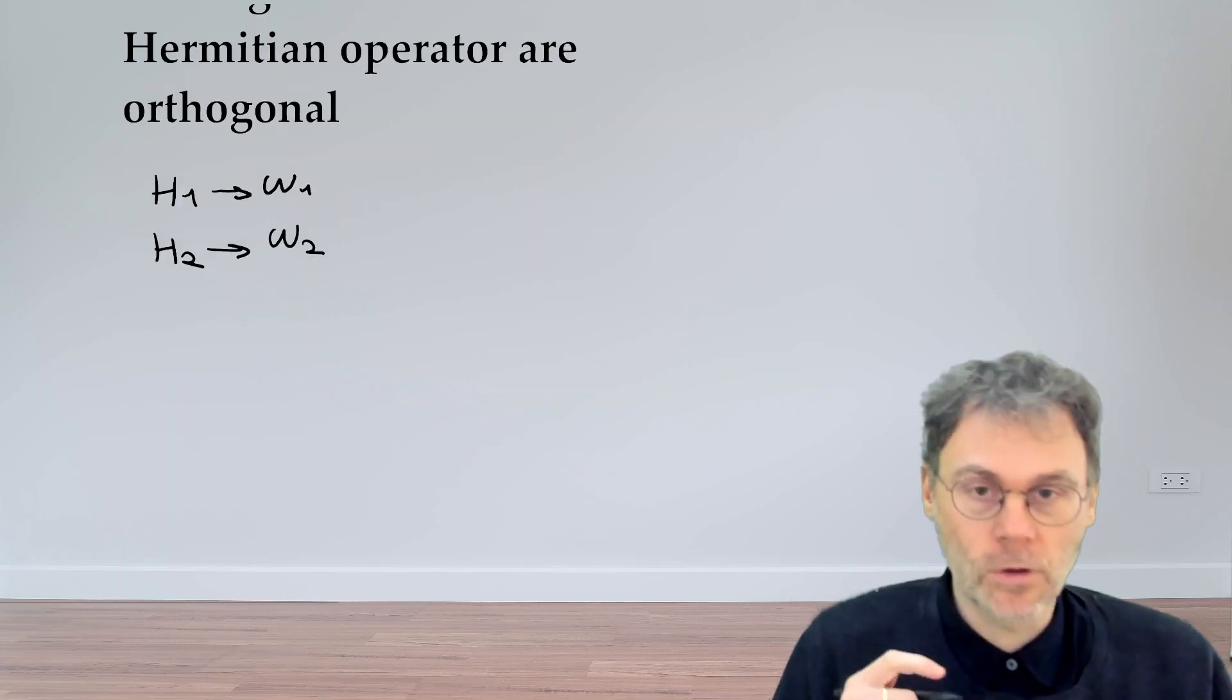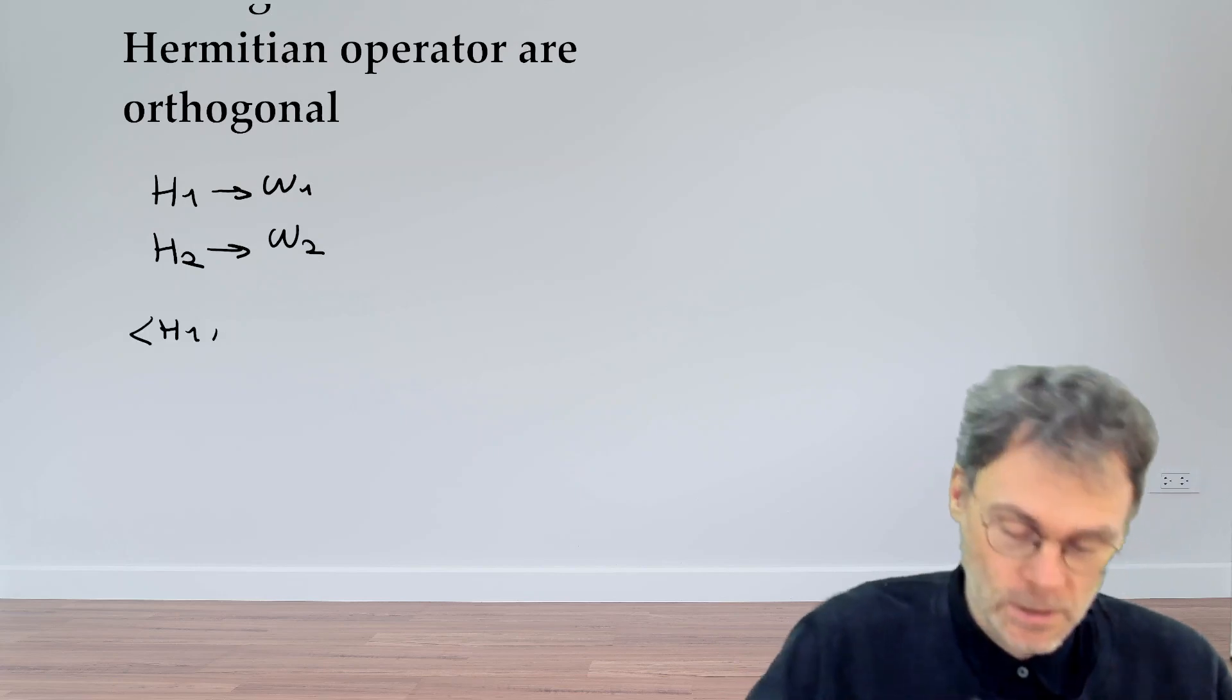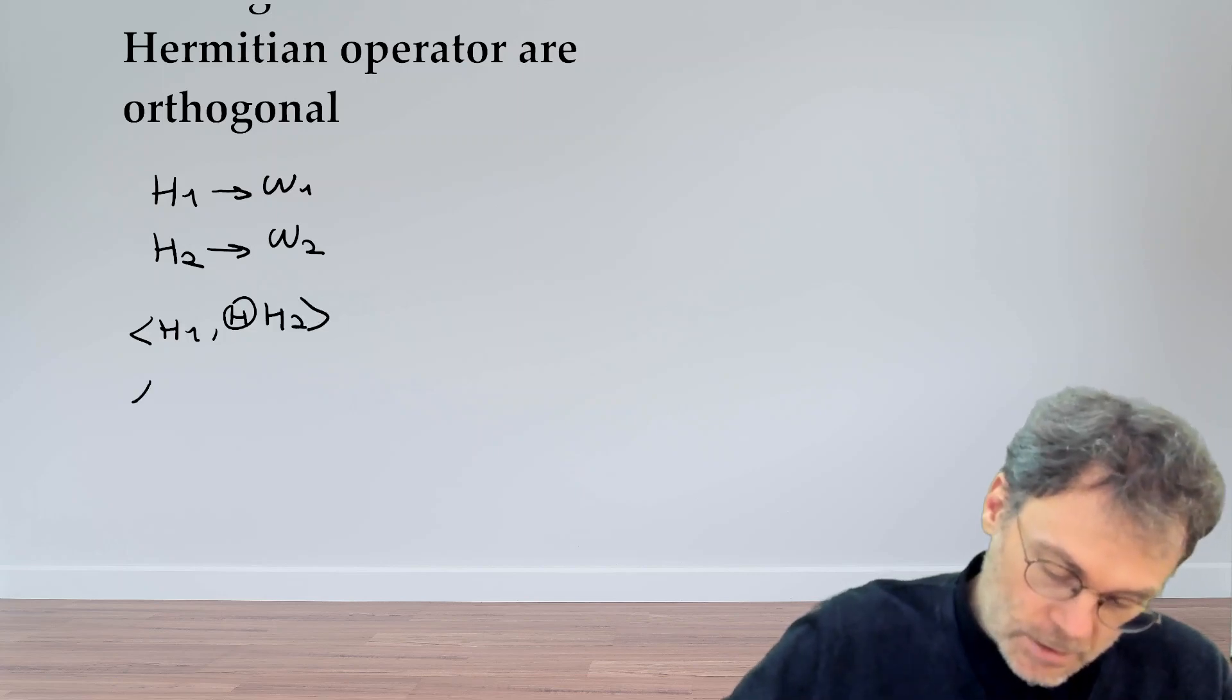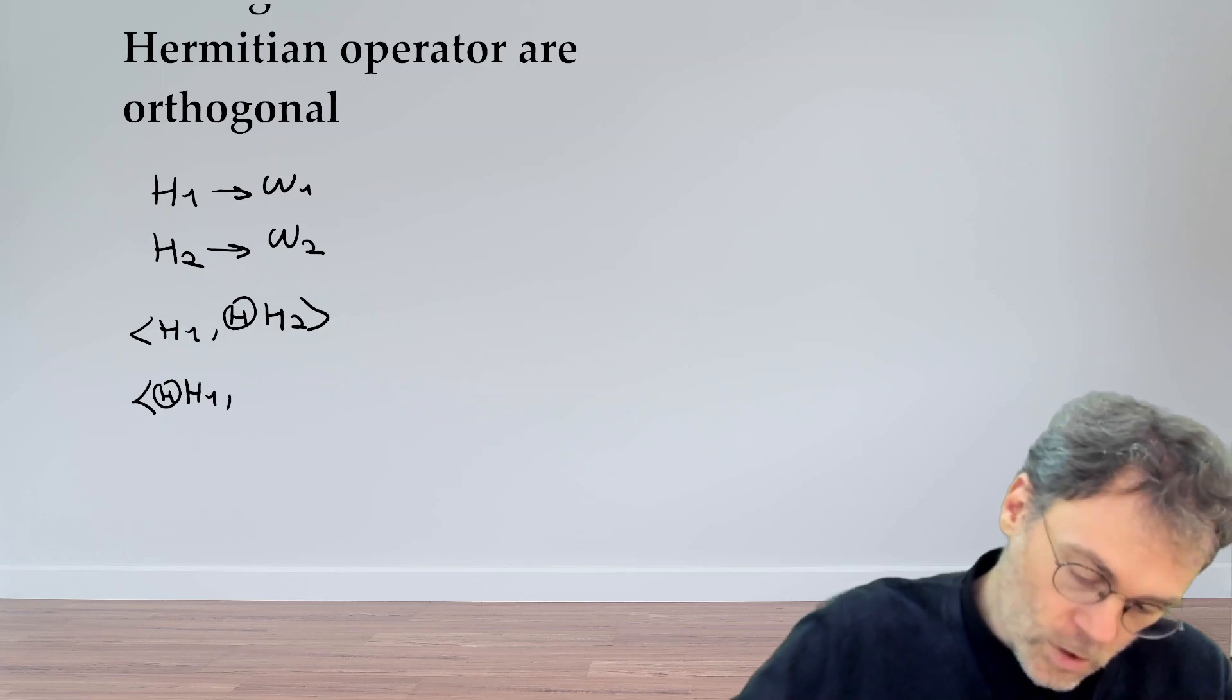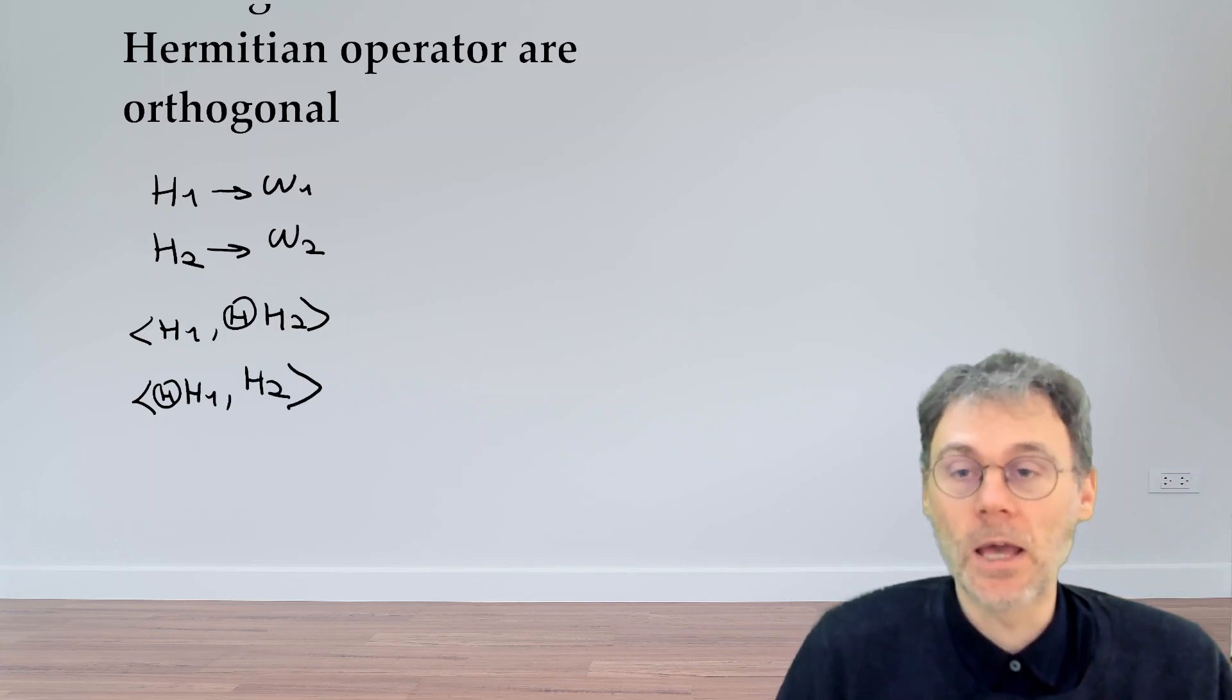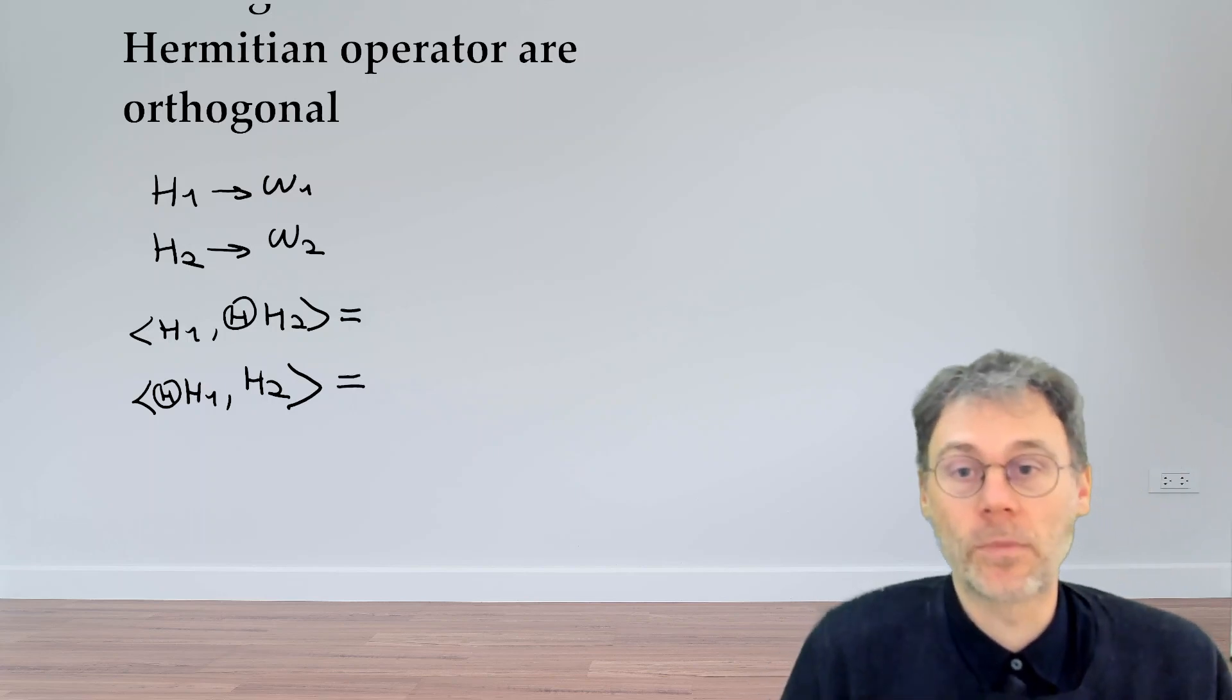In order to do that, we're going to calculate two expressions. The first one being H1 and then theta H2, and the second expression being theta H1 H2. So what I suggest you do is pause the video, write down what these things are equal to based on the form of our eigenvalue problem,